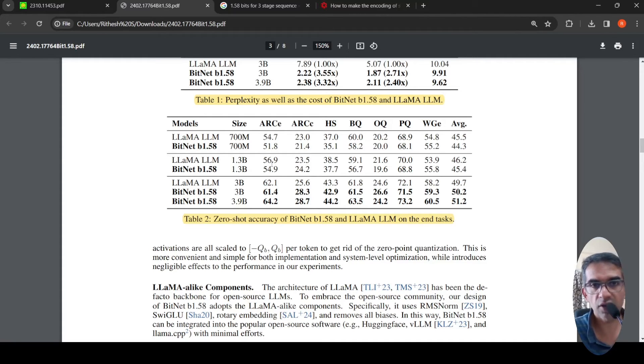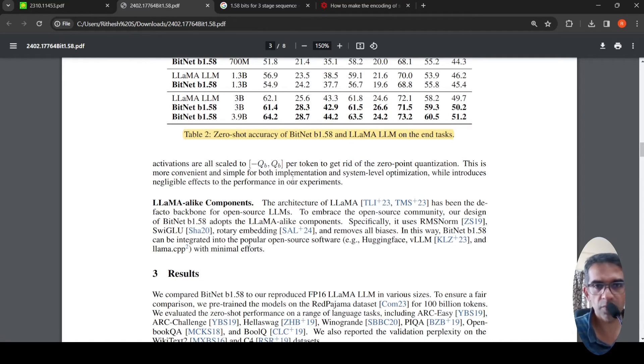Now you can take this with a grain of salt because, if they are trained on, if there was leakage on benchmarks and other things, there are a lot of other possibilities why these numbers could be high. And the architecture of this particular B1.58 is very similar to LLM like architecture. That's what they say over here.